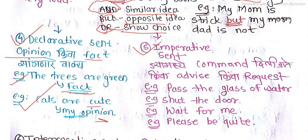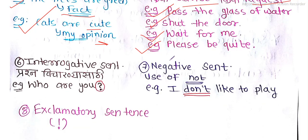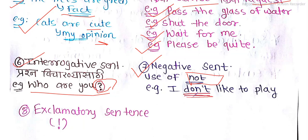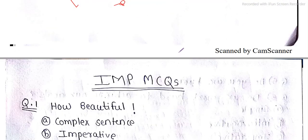The fifth type is the imperative sentence, where a command, advice, or request is given. For example: 'Shut the door' — command. 'Pass the glass of water' — command. 'Wait for me' — request. 'Please be quiet' — request. Then interrogative sentences have a question mark. Negative sentences have negation like 'not.' Exclamatory sentences express strong emotion with an exclamation mark.